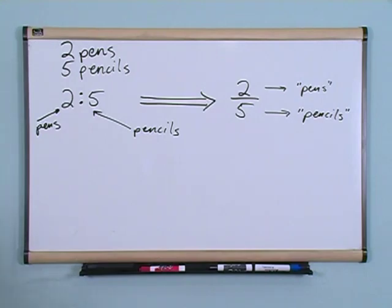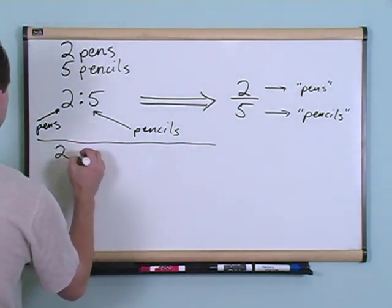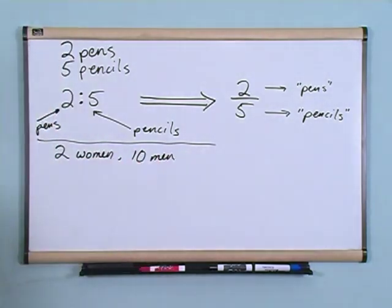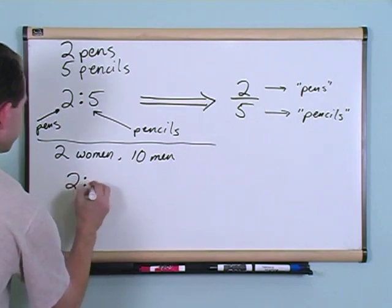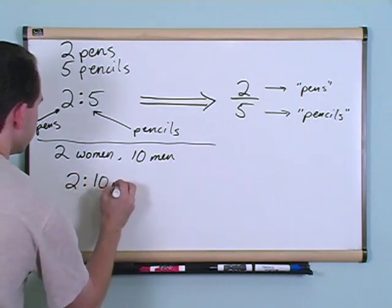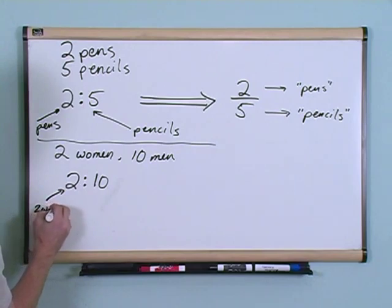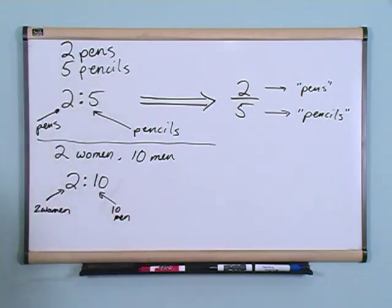Now let's pick another ratio. Let's give a couple more examples. Let's say you have in a room two women and ten men. Two women and ten men. What is the ratio of women to men? The ratio of women to men. Well, it's two women to ten men. Just write it like this, two colon ten. That means that there's two women for every ten men. For every ten men.